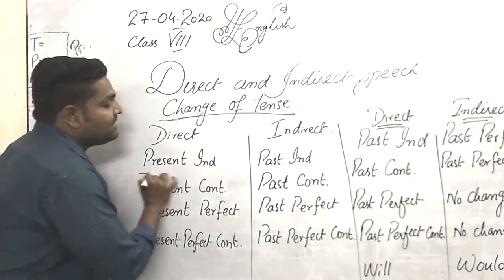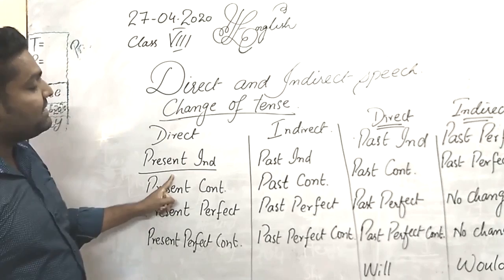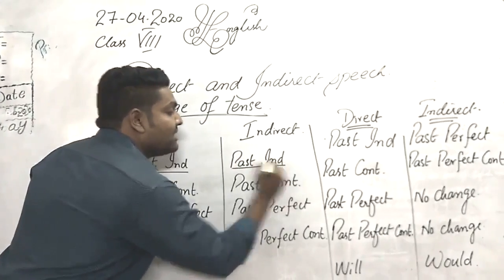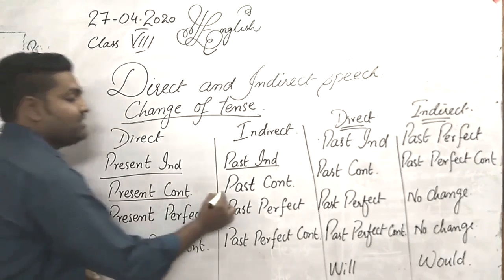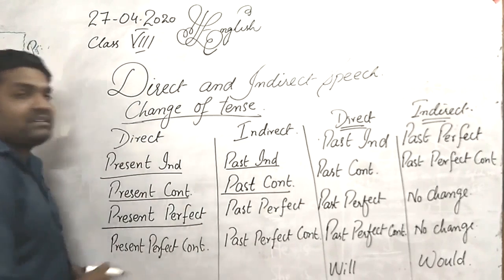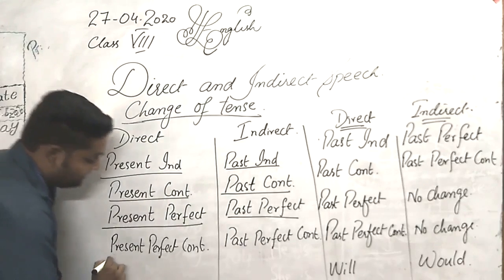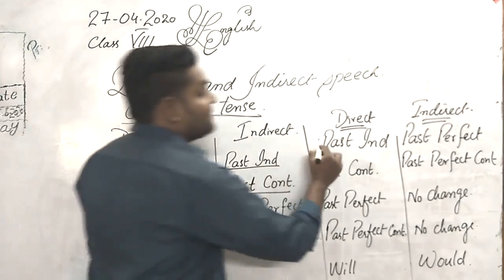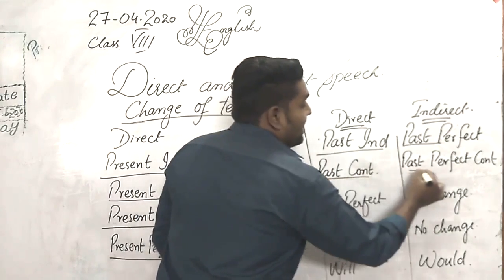When the sentence is in the present indefinite, we use the present indefinite direct sentence and change it into past indefinite. Similarly, present continuous must be changed into past continuous. Present perfect into past perfect. Present perfect continuous into past perfect continuous. Past indefinite into past perfect continuous.